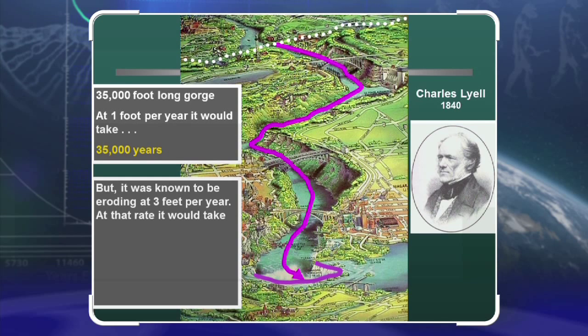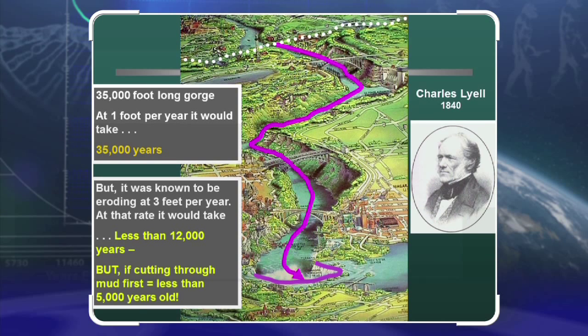If you do the math — 35,000 feet at three feet per year — that works out to less than 12,000 years. But if you factor in that after the worldwide flood of Noah these layers were fresh wet mud, which erodes much faster than hard rock, then the water would have been cutting through much faster initially and slower as the mud solidified. This puts the formation of the falls at well under 5,000 years, consistent with the Bible's worldwide flood about 4,500 years ago. You really can trust the Bible.